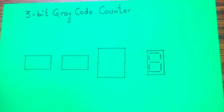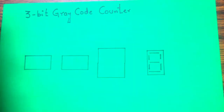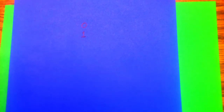Hi folks, welcome to another tutorial. This is Dr. McGall here. Today we are going to create a 3-bit binary gray code counter. Now for those of you who don't know how to create a gray code, in digital electronics the binary digit, also known as a bit, can be zero or one.